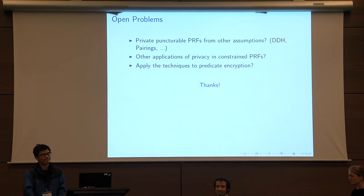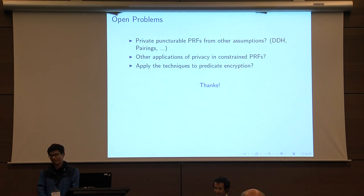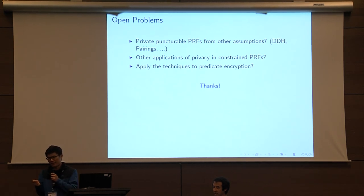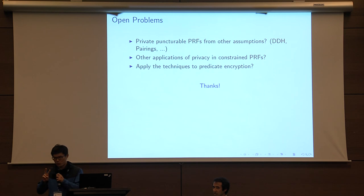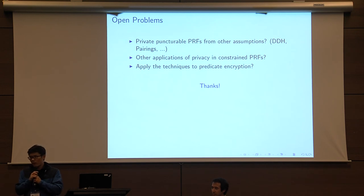Are there any questions? [Question: Are private puncturable PRFs known to imply anything stronger than one-way functions, like OT or PKE?] For constraint PRFs with two keys, yes, but for puncturable PRFs you publish only a single key — and if you publish a single key you can evaluate the PRF on all points, so you can't have a well-defined notion of security in that way. Regarding whether the existence of private puncturable PRFs implies anything beyond one-way functions — no, I don't think that's known.